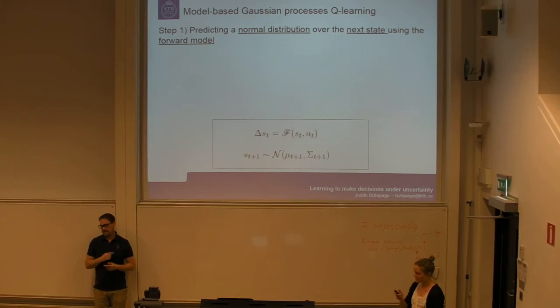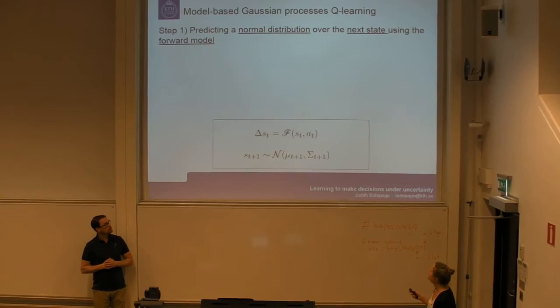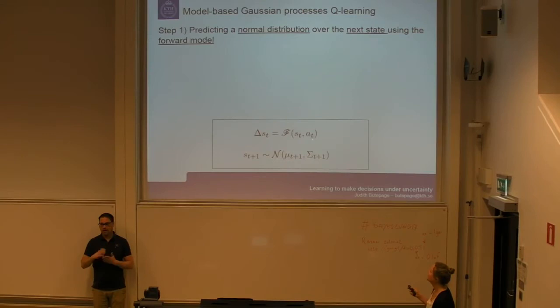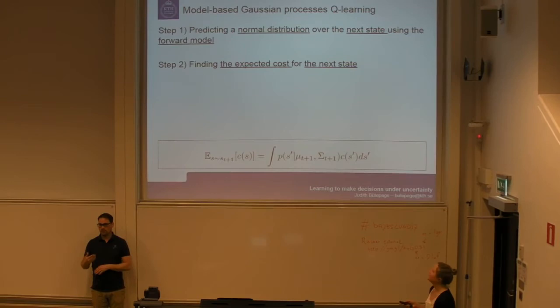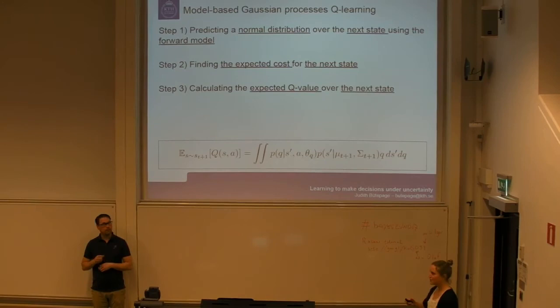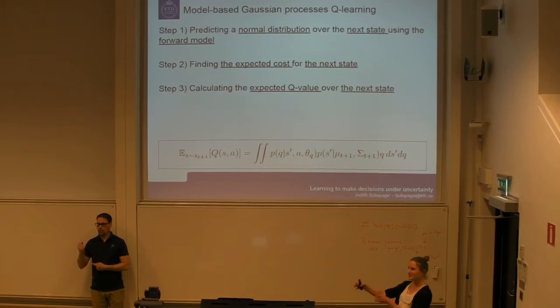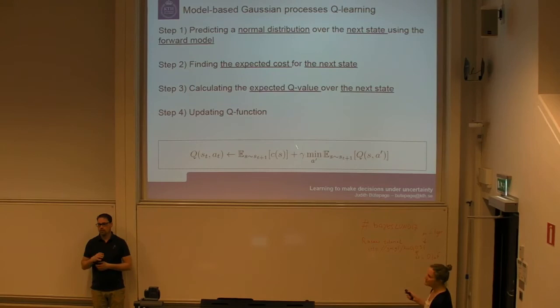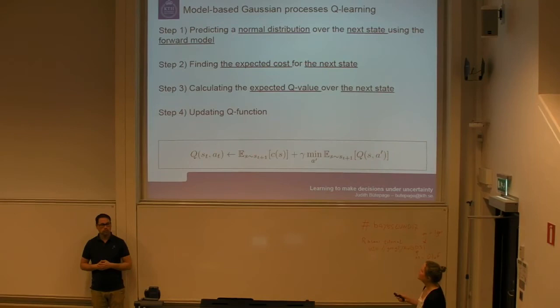Luckily, this can be done iteratively. We determine the forward model of state s(t) and action a(t), then compute the immediate expected cost by integrating over all possible outcomes of the action at the current state times the cost at the future state. We also compute the Q-value of being at the next state and taking the next optimal action — an estimate of future reward from that step onward. Finally, we update the Q-function by taking the immediate cost plus the expected future cost, and by doing this while operating the robot we iteratively refine the function.